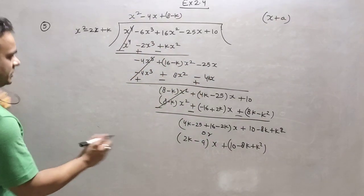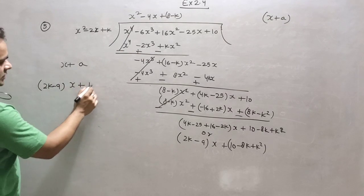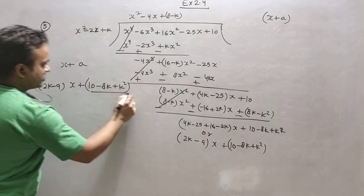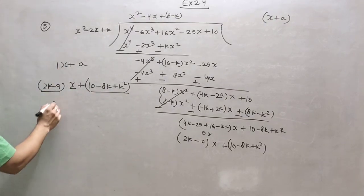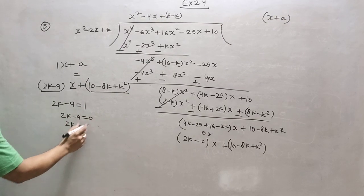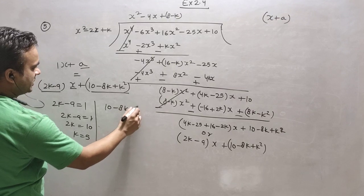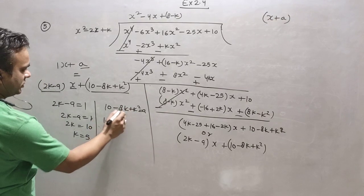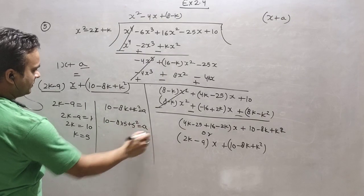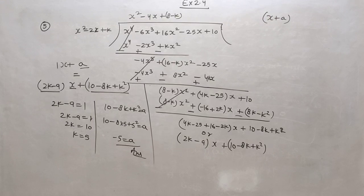Now comparing: according to the question the remainder is x plus a, and according to our division it is (2k minus 9)x plus (10 minus 8k plus k squared). The coefficient of x is 1, so 2k minus 9 equals 1, giving 2k equals 10, so k equals 5. The remaining part equals a: 10 minus 8(5) plus 5 squared equals 10 minus 40 plus 25 equals minus 5. So a equals minus 5. You have to be very careful about minus or plus signs. Thank you for watching this video.